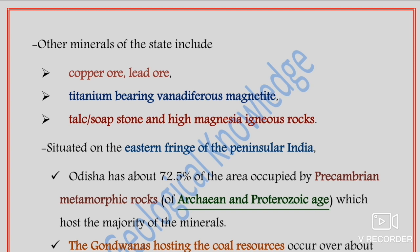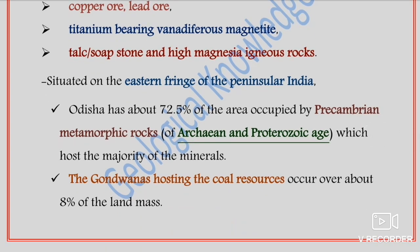The 72.5 percent of area occupied by Precambrian metamorphic rocks is of Archaean and Proterozoic age — roughly 2.2 to 2.5 billion years — and these host the majority of the minerals. The Gondwana formations hosting the coal resource occur over about eight percent of the land mass of the state.